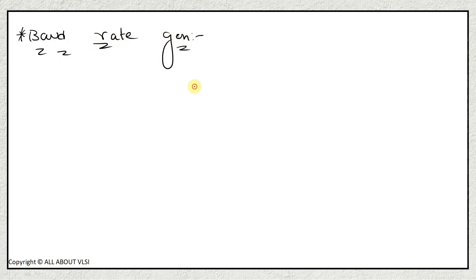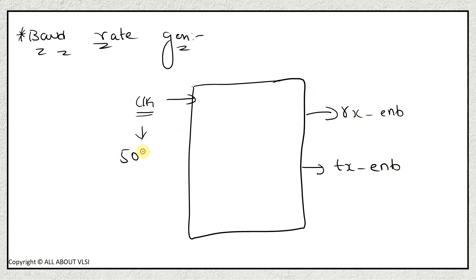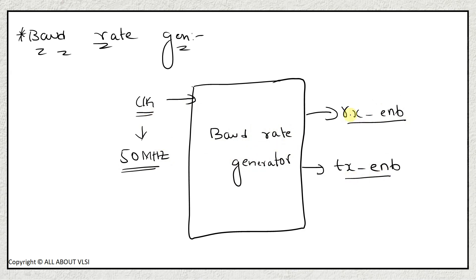Let us start our discussion with the baud rate generator - what are the inputs and outputs. The baud rate generator module has a clock as input and outputs rx_enable and tx_enable. The clock frequency is 50 MHz. This module will enable rx_enable and tx_enable according to the baud rate requirements. We are going to design this baud rate generator for achieving a baud rate of 9600.